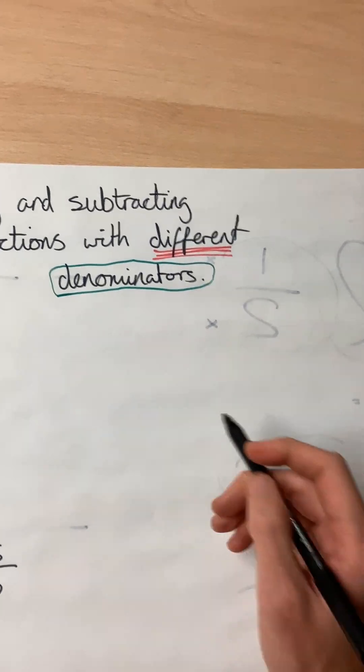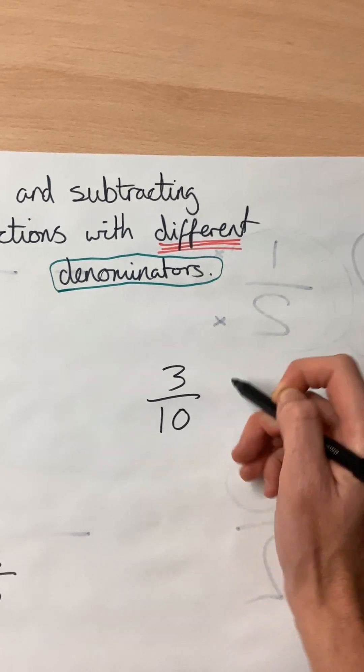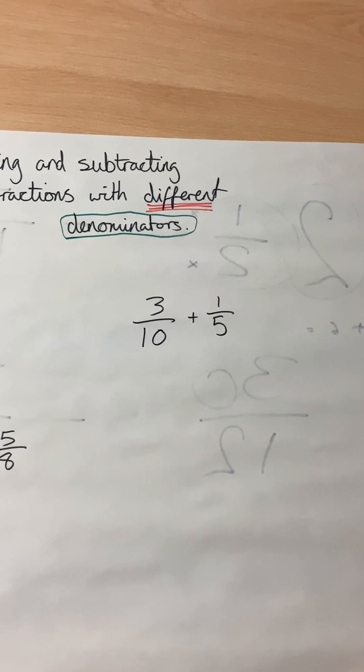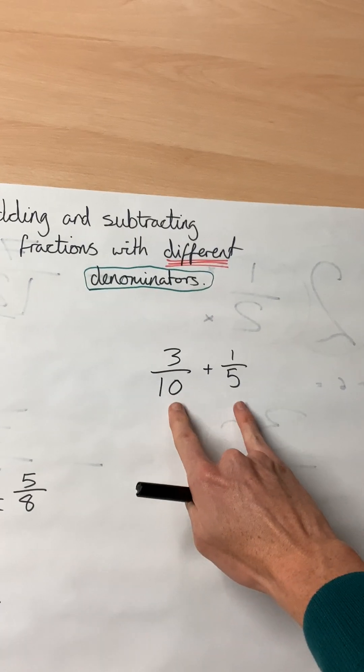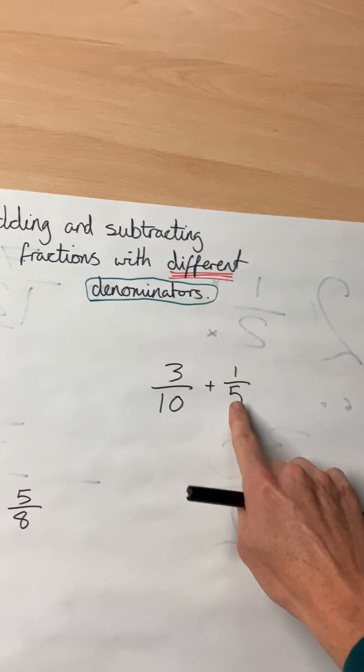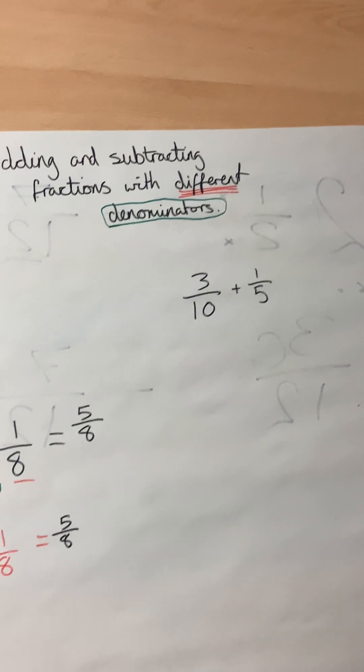So for example, if we had three-tenths plus one-fifth. Now exactly the same. We've got different denominators. So we need to make this one become the same as this.